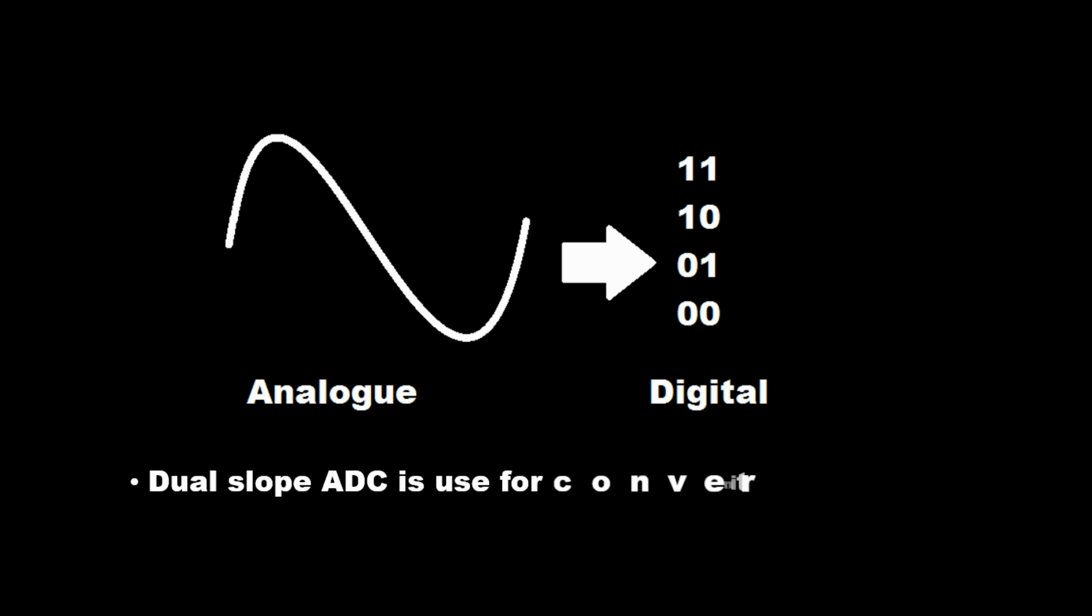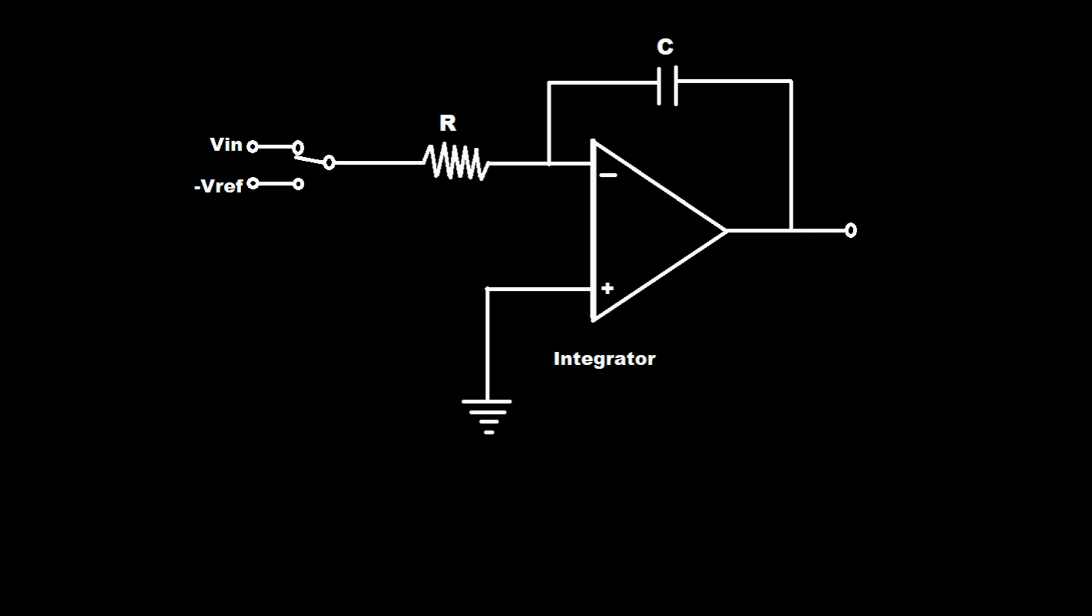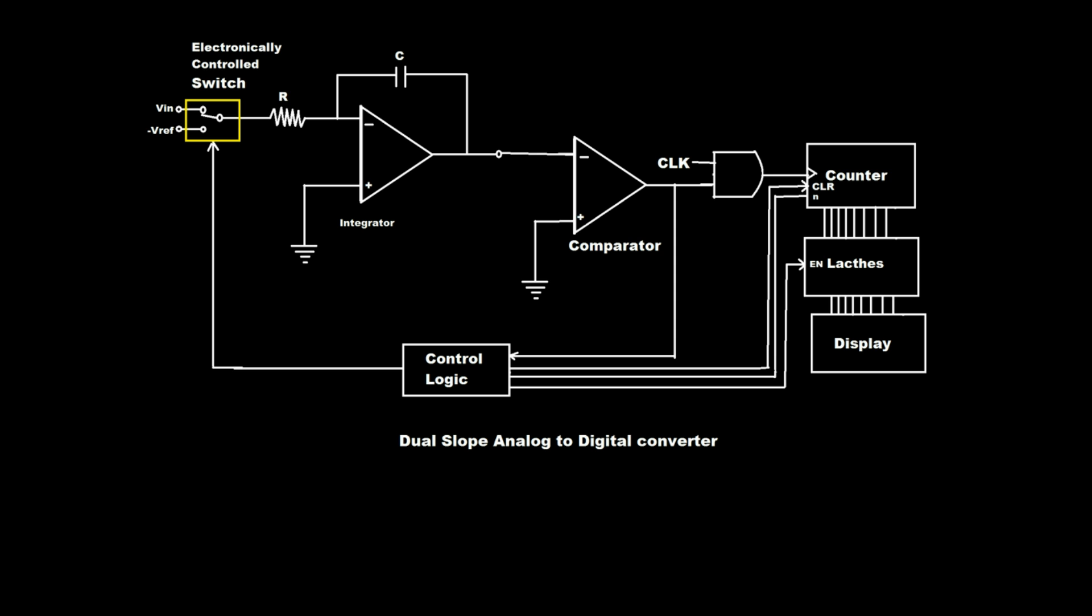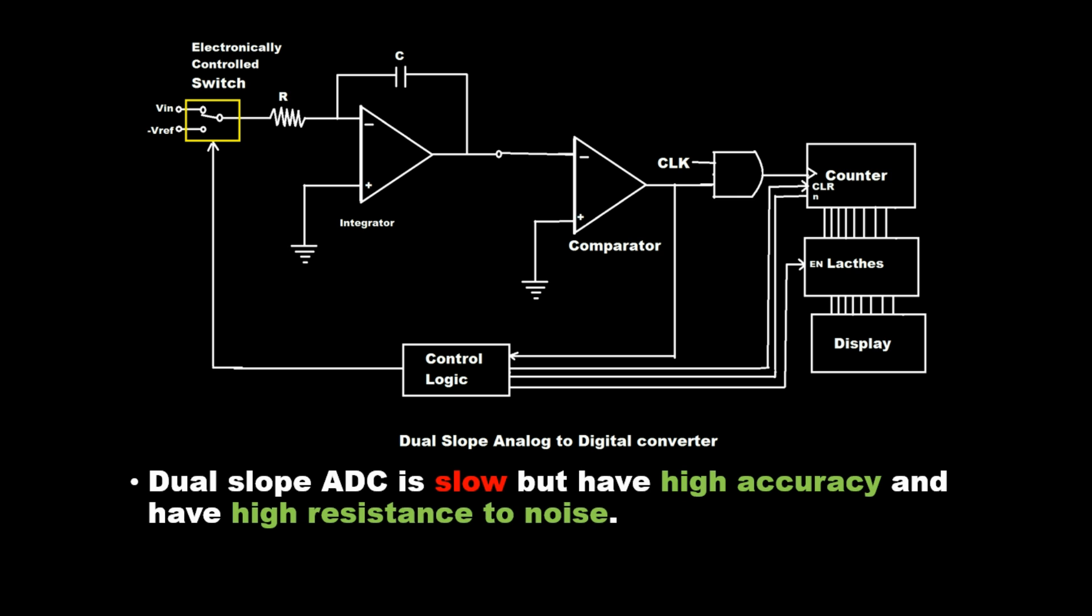Dual Slope ADC is used for converting analog to digital value. This is an integrator. Dual Slope ADC is slow but has high accuracy and high resistance to noise.